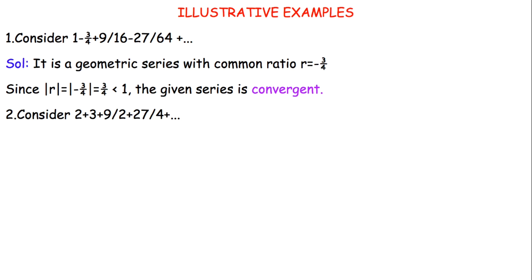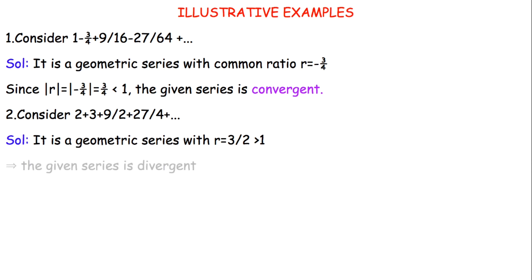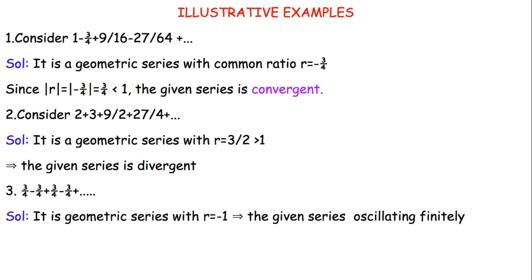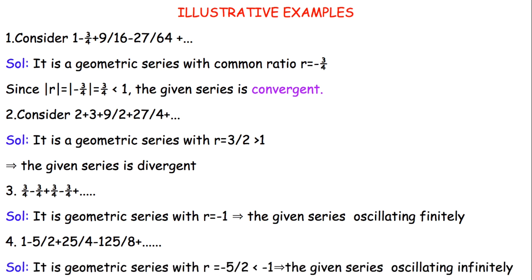In the second example, 2 + 3 + 9/2 + 27/4 + ..., the common ratio r = 3/2 > 1, so the series is divergent. In the third example, r = -1, so the series oscillates finitely. In the fourth example, 1 - 5/2 + ..., r = -5/2, which is less than -1, so the series oscillates infinitely.